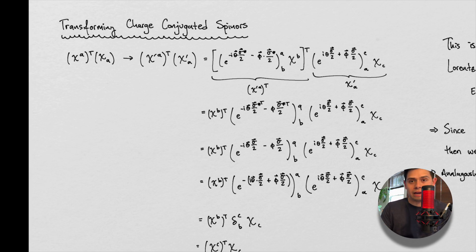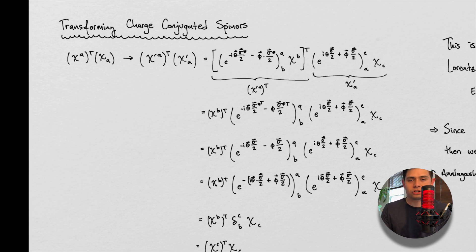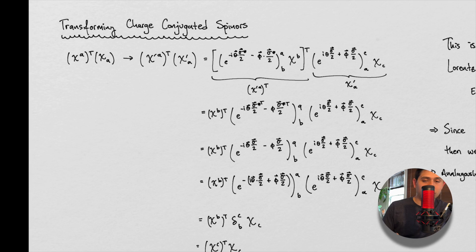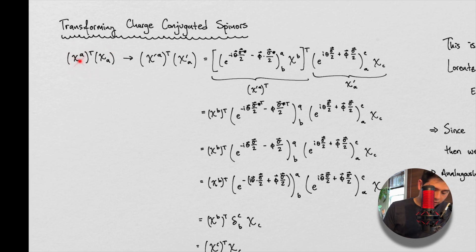Spinors are complex in nature — there's such a thing as conjugating them because they are complex; they involve the number i. If you've taken complex analysis or even linear algebra, you can at least somewhat understand what a conjugate of a complex number is. That's at the root of what it means to conjugate something. So let's remind ourselves: superscript is a left chiral spinor, subscript is a right chiral spinor.